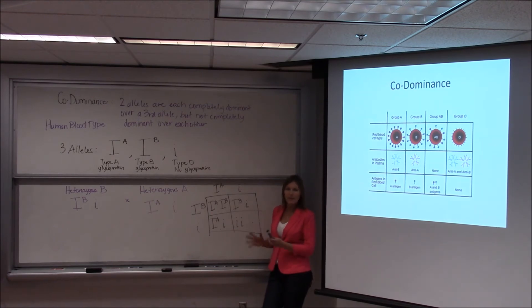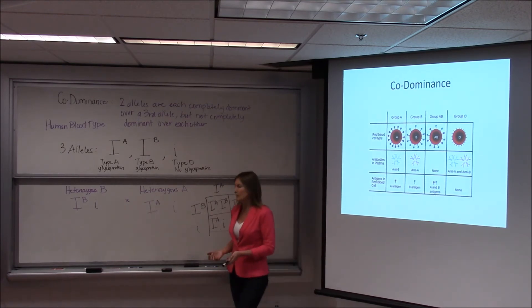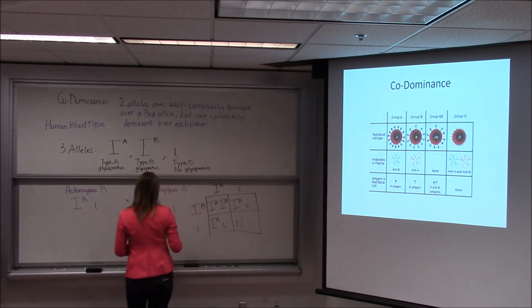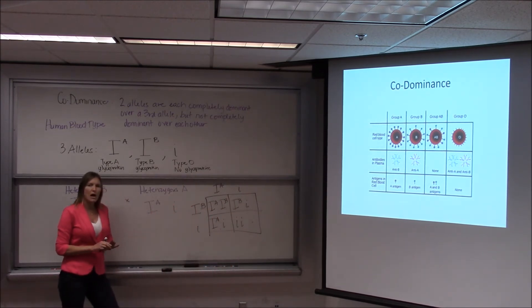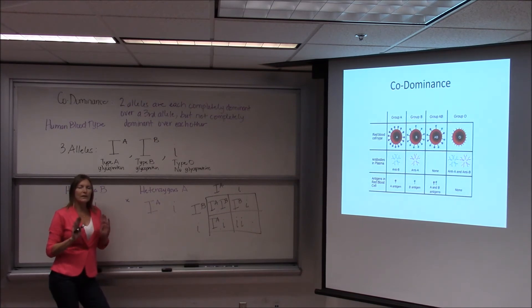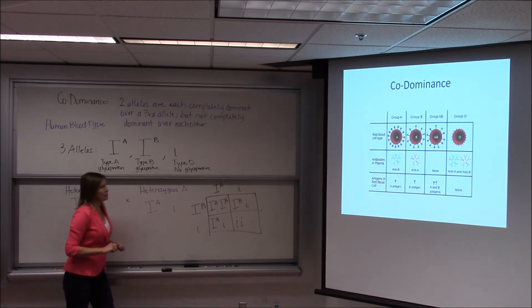Blood type crosses are pretty interesting. Again, this is co-dominant — A and B are both completely dominant over O, but they're not completely dominant over each other. When you have one of each allele, they are both expressed.